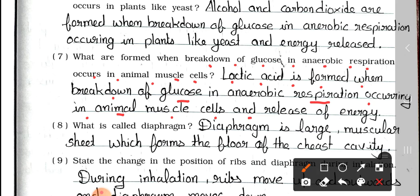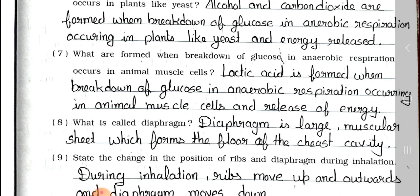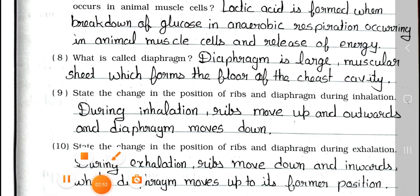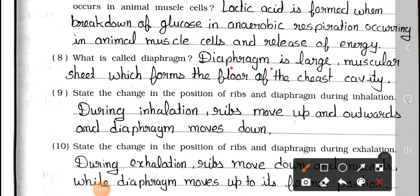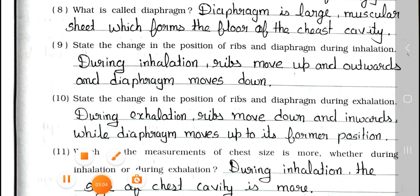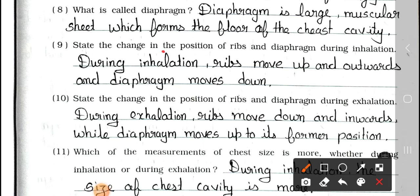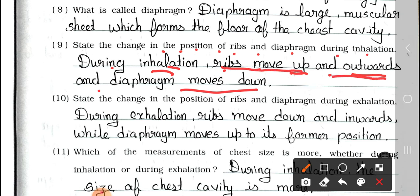Answer: Lactic acid is formed, along with release of energy, when breakdown of glucose occurs in anaerobic respiration in animal muscle cells. Question number 8: What is called diaphragm? Answer: Diaphragm is a large muscular sheet which forms the floor of the chest cavity. Question number 9: State the change in the position of ribs and diaphragm during inhalation. Answer: During inhalation, ribs move up and outwards and diaphragm moves down.